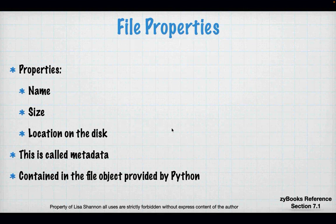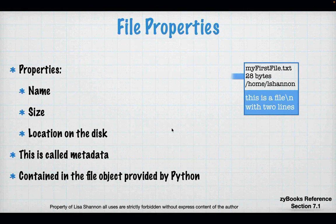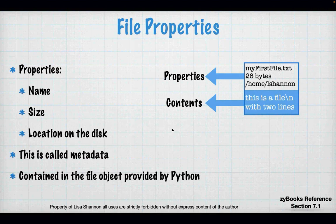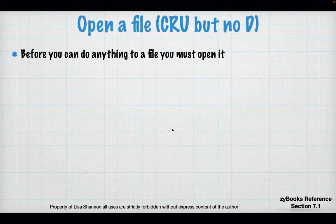That's called metadata, and it's contained in the file object. This is our first real explicit foray into objects in Python — and next week we're going to talk all about classes and objects. So I have a thing called a file. My file has properties and contents. So the properties of my file are the name — my first file — it's 28 bytes, it's under Home L Shannon. And then, separate from that, it has contents, and the contents say: this is a file with two lines.